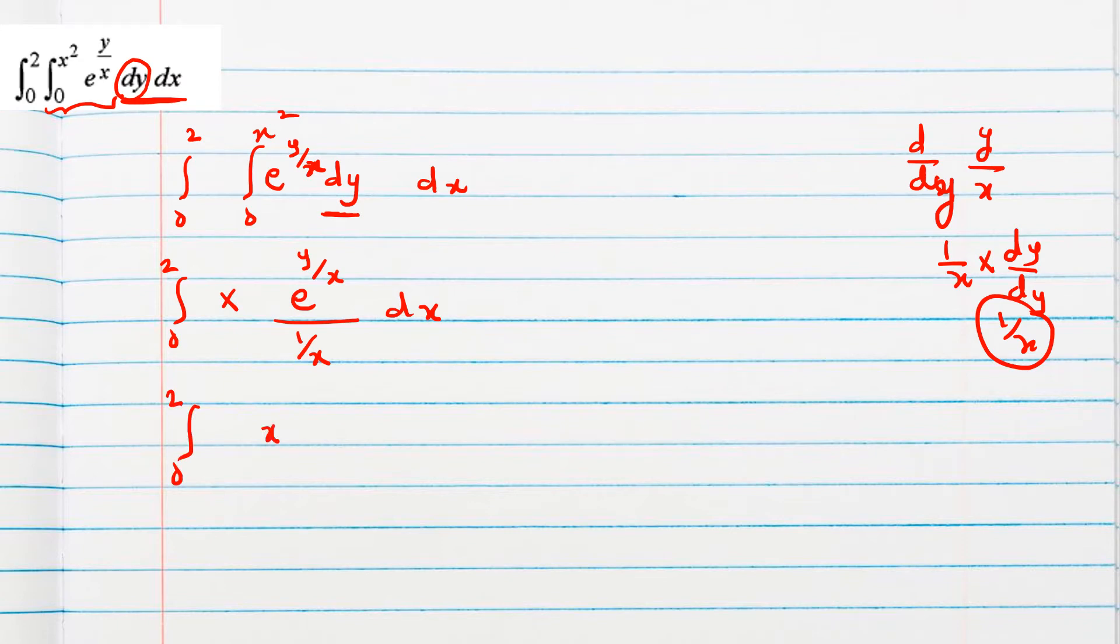Then 0 to 2, x will go up. e power y by x between the limit 0 to x square. So first we should write the limit. x will be same, x is coefficient, so that means we are going to apply y value only. We integrated with respect to y, so these are the y values. x will remain same, y value we should substitute.